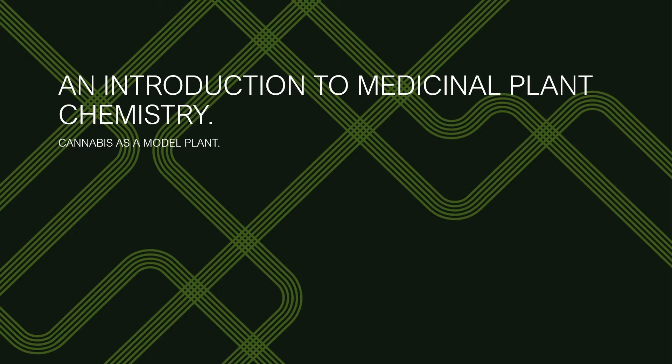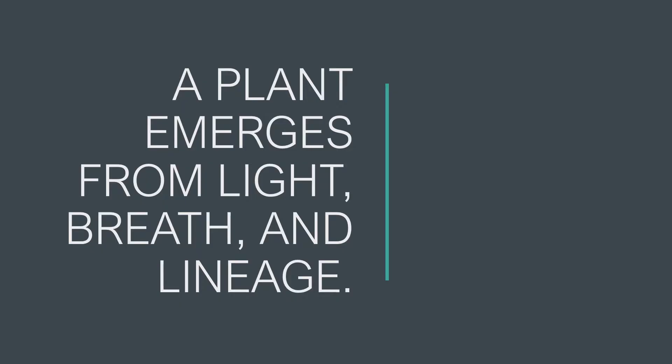They might not realize how to apply that knowledge to other plants. A plant emerges from light, breath, and lineage. If we're to understand the basic elements of a plant: we have light — that's photosynthesis; breath — that's the carbon dioxide that fungi and animals breathe out; and lineage — that's the genetics. It's important to remember that lineage has to do with both form and environment.